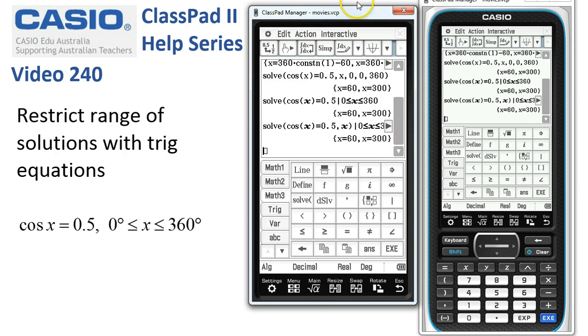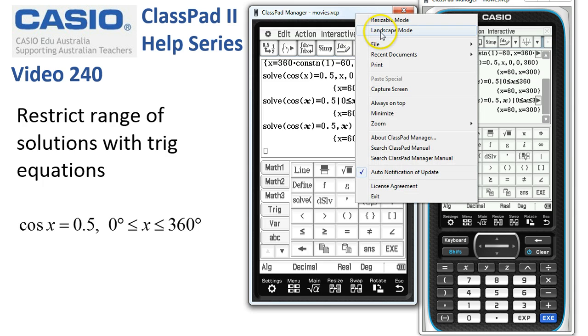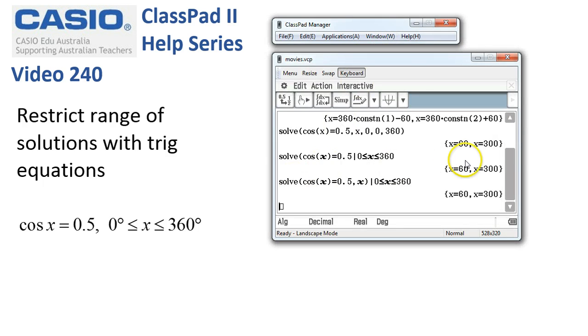Again, we get the same result. One more look at that in landscape mode. You can see we have several ways of solving these trig equations to always get the desired range of solutions.